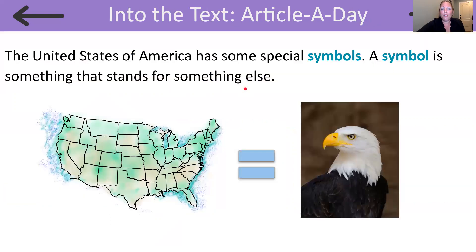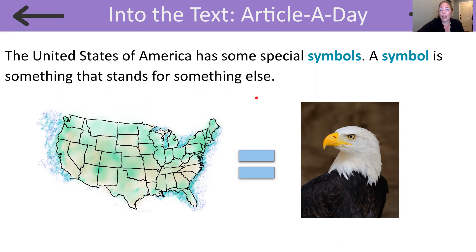Okay, join me as I read our article. The United States of America has some special symbols. A symbol is something that stands for something else. In our last article, we read about the American Bald Eagle, and that is a symbol that stands for the United States of America.